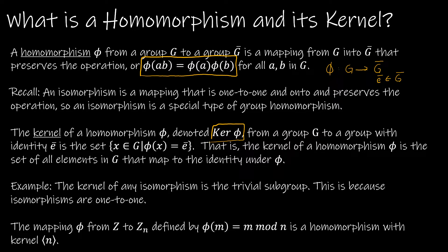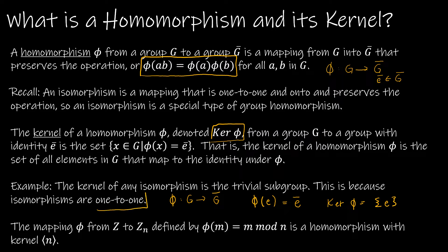For example, if we have an isomorphism that maps from G to G bar, the kernel of that isomorphism is going to be the trivial subgroup because it's one-to-one. So only one element maps to the identity in G bar, and that is the identity in G. So phi of E equals E bar, and the kernel of phi is just {E}. If we're looking at the mapping phi from Z to Zn defined by phi(m) = m mod n, it's a homomorphism with kernel the cyclic subgroup generated by n.